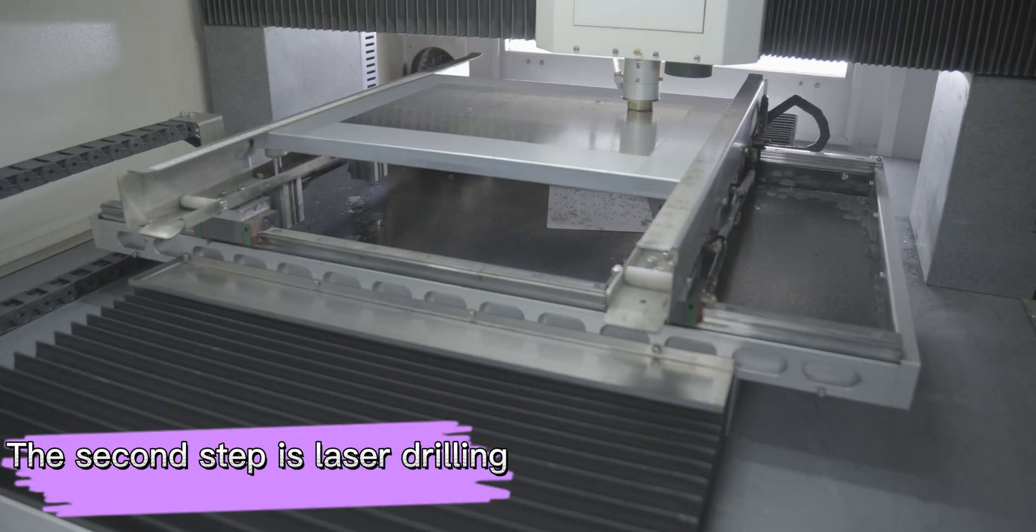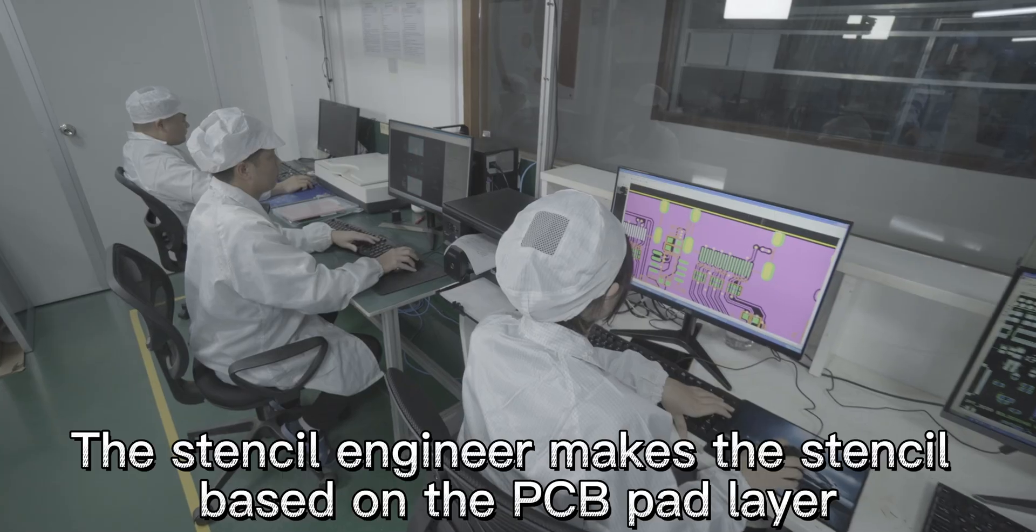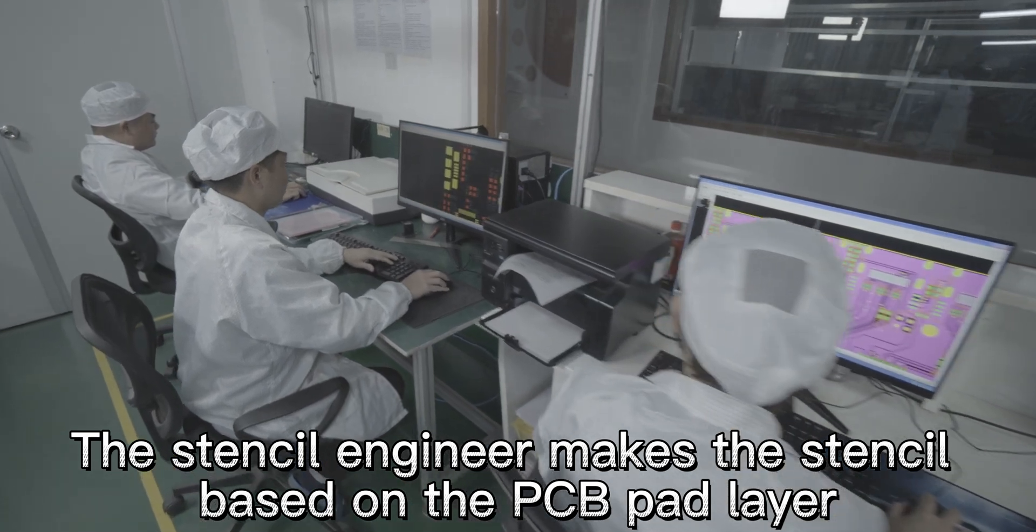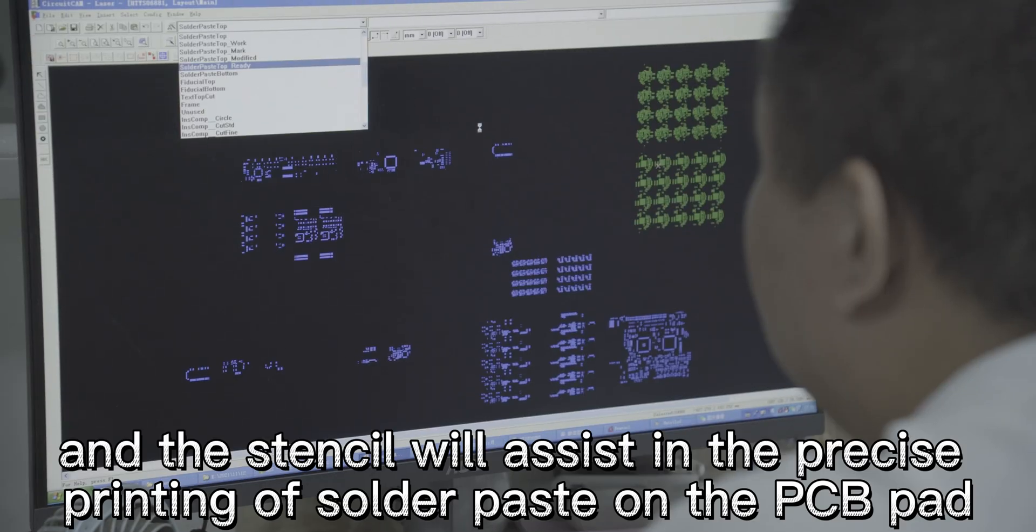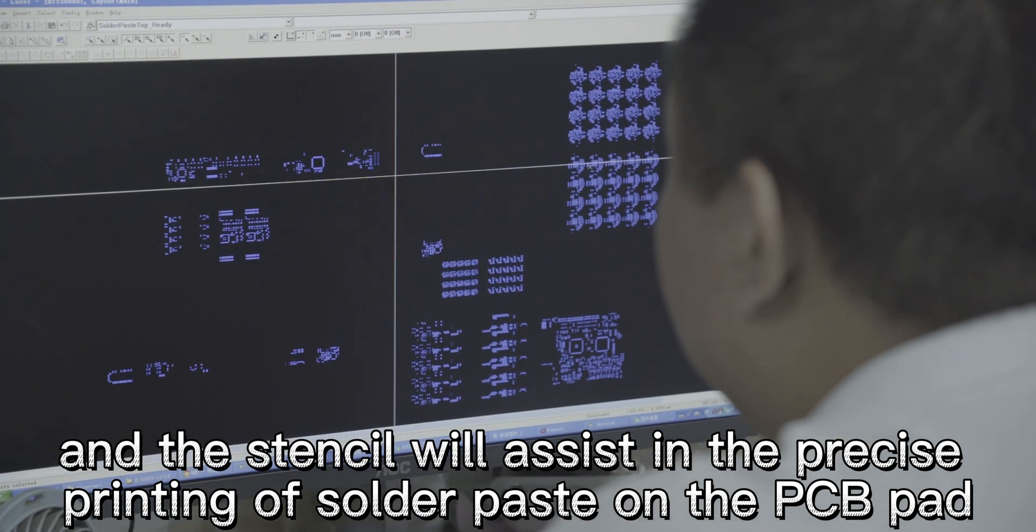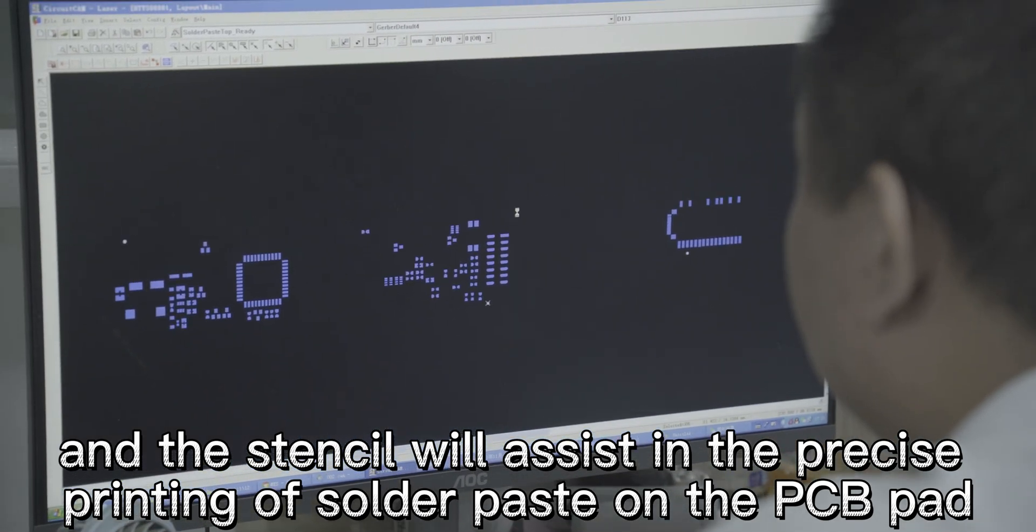The second step is laser drilling. The stencil engineer makes the stencil based on the PCB pad layer. The stencil will assist in the precise printing of solder based on the PCB pad.